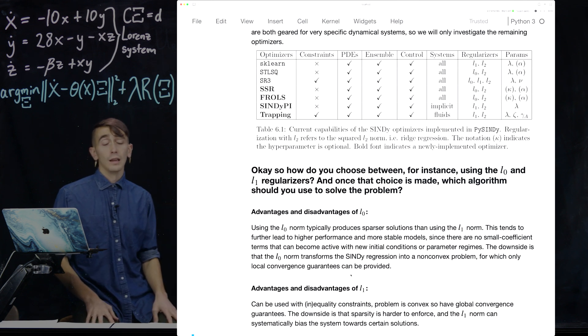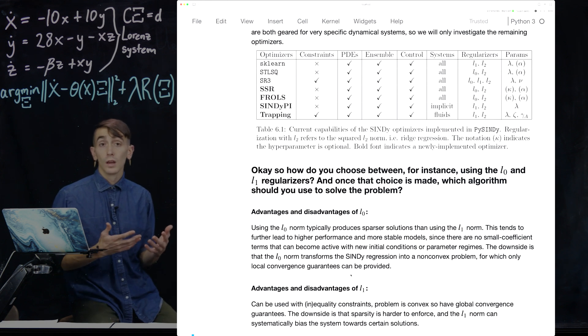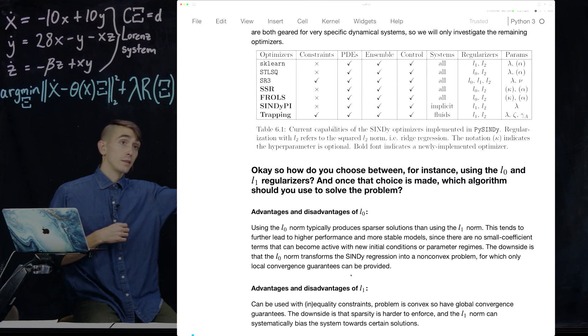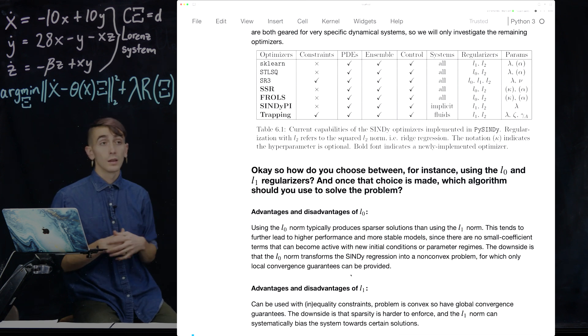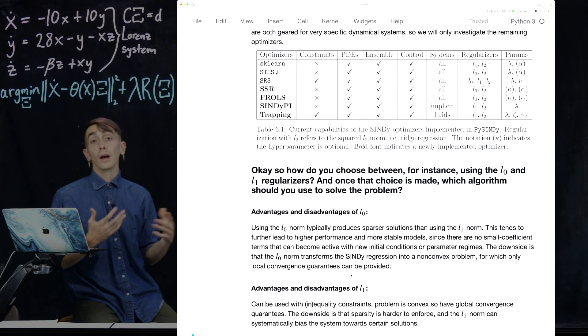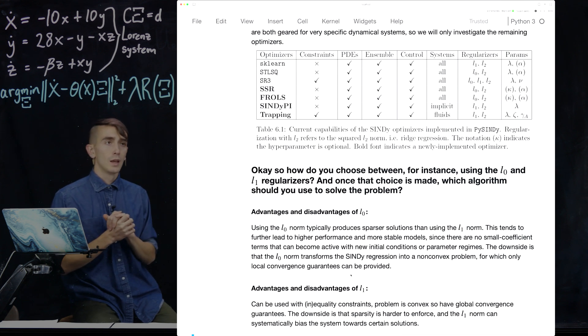And then how do you actually choose between the optimizers is a little more complicated. Some things you might think about are how many hyperparameters do you want to deal with in your algorithm. So SSR and referrals in principle have no hyperparameters, which is really nice if you don't want to have to tune things. And then, for instance, trapping SINDY has a bunch of hyperparameters. And this is because it has extra loss terms that promote stability in this way I've shown earlier in the videos.